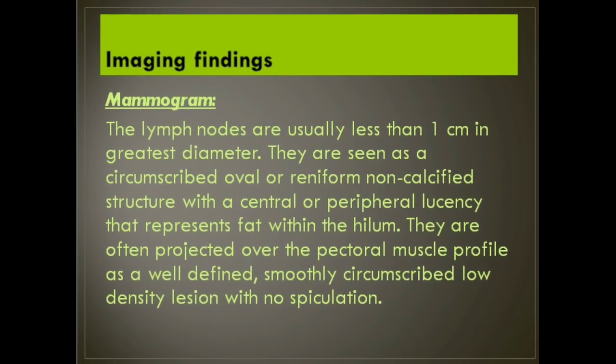Imaging Findings. Mammogram. The lymph nodes are usually less than 1 cm in greatest diameter. They are seen as a circumscribed oval or reniform non-calcified structure with a central or peripheral lucency that represents fat within the hilum.